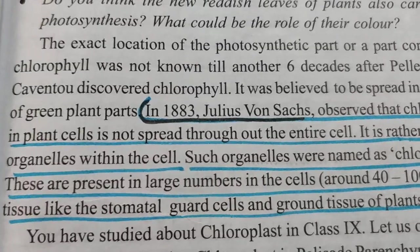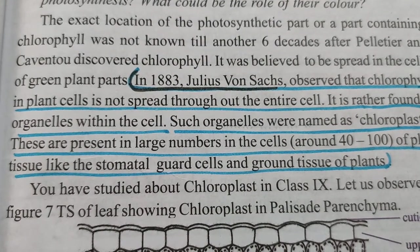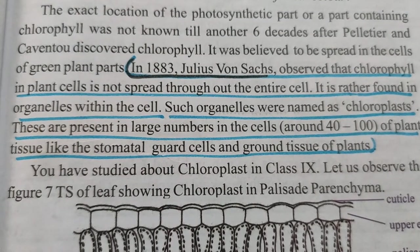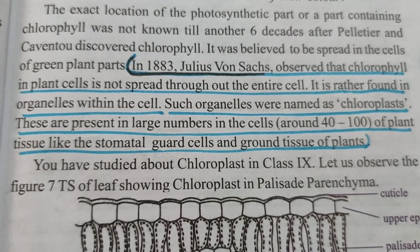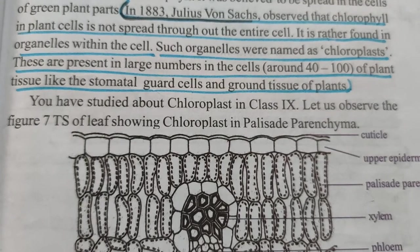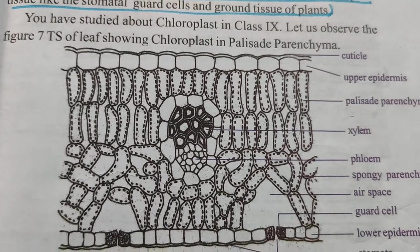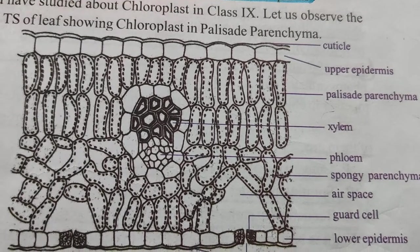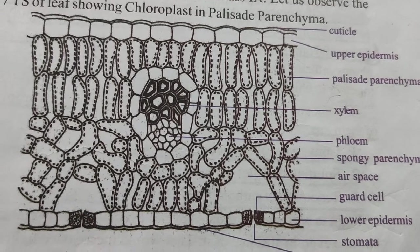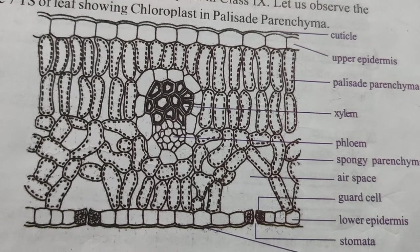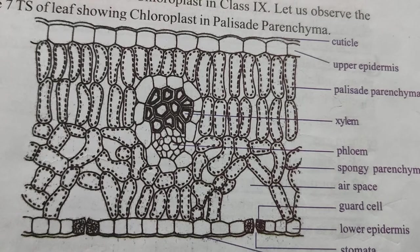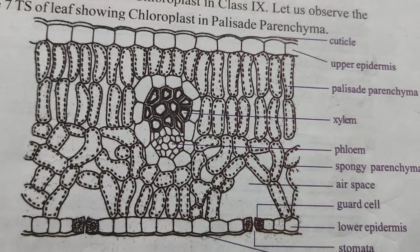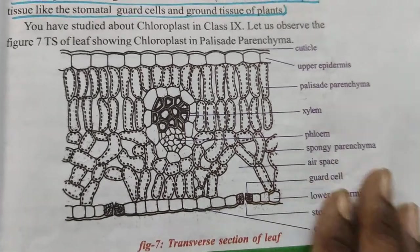In 1883, Julius von Sachs observed that chlorophyll in plant cells is not spread throughout the entire cell — it is rather found in organelles within the cell. Such organelles are named chloroplasts. These are present in large numbers in the cell, around 40 to 100, in plant tissues like stomatal guard cells and ground tissue. In the TS of the leaf: upper cuticle, upper epidermis, elongated palisade parenchyma cells, xylem, phloem, spongy parenchyma, air spaces, guard cells, lower epidermis, and stomata. The upper side of the leaf is greener due to palisade parenchyma containing more chloroplasts.